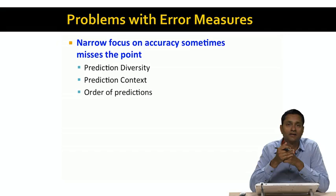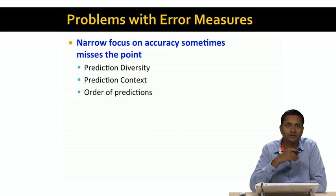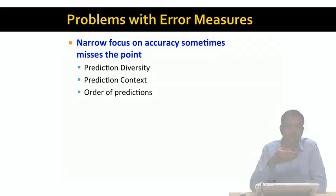Finally, the order of predictions also turns out to be hugely important. For example, when there's a series of books or movies, you want to recommend items that are earlier in the sequence ahead of items that are later in the sequence.